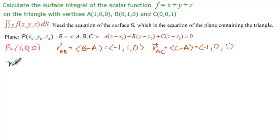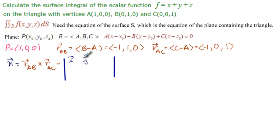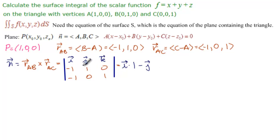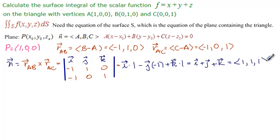We find the vector product — it's going to be our normal vector. N equals R_AB cross R_AC. We draw the determinant with i, j, k in the first row; -1, 1, 0 in the second; and -1, 0, 1 in the third. This gives i(1-0) minus j(-1+0) plus k(0+1), which equals i plus j plus k. So the components of N are (1, 1, 1).